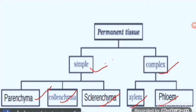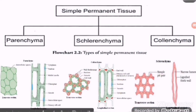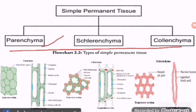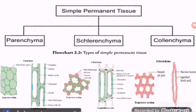Let's discuss in detail what simple permanent tissues are. Simple permanent tissue is of three types: parenchyma, sclerenchyma, and colenchyma. You will also see the NCERT figure here — this is parenchyma, this is colenchyma, and this is sclerenchyma. Now we are going to study each one in detail.